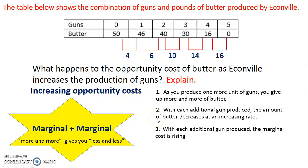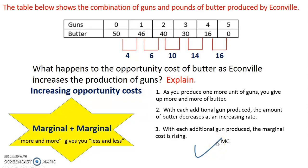A third way you could say it is that with each additional gun produced — that's marginal analysis — the marginal cost is rising. If you've already learned about the marginal cost curve, think about its shape: the marginal cost is going up, and this shows an increase in opportunity cost. That's diminishing returns. The opposite would be increasing returns. So another way to explain increasing opportunity costs is by talking about marginal cost rising.